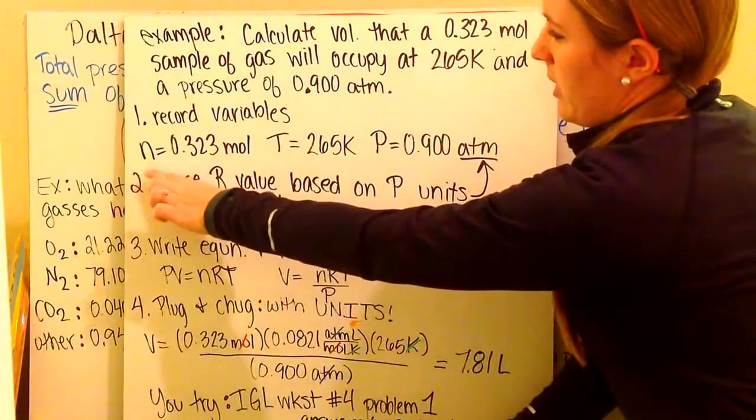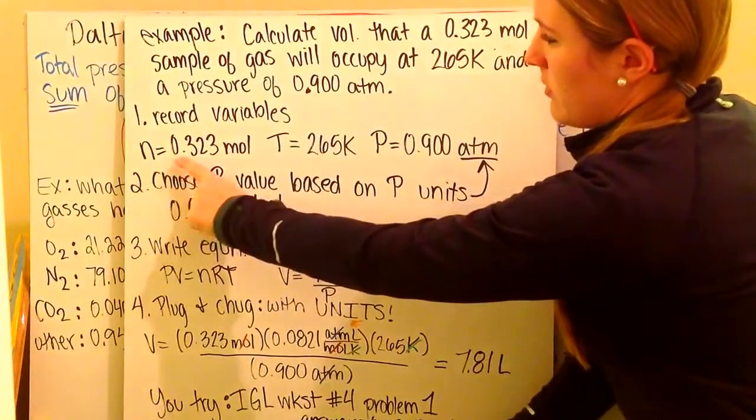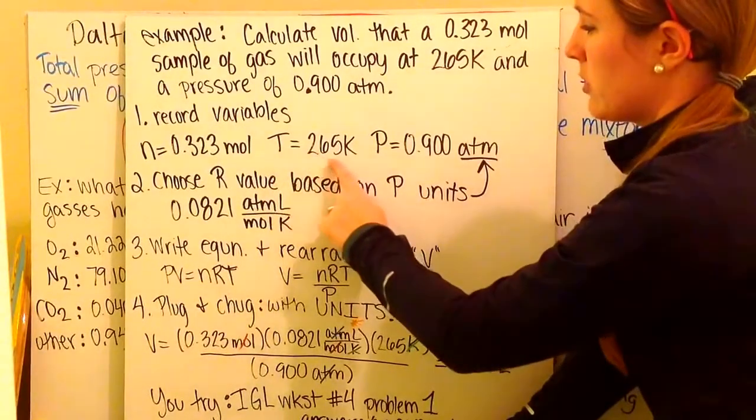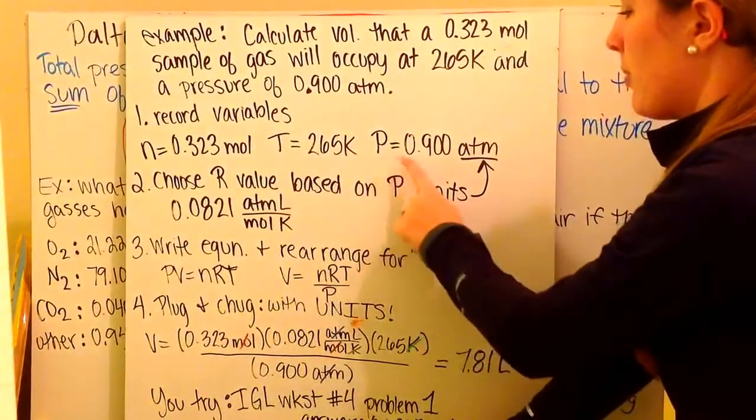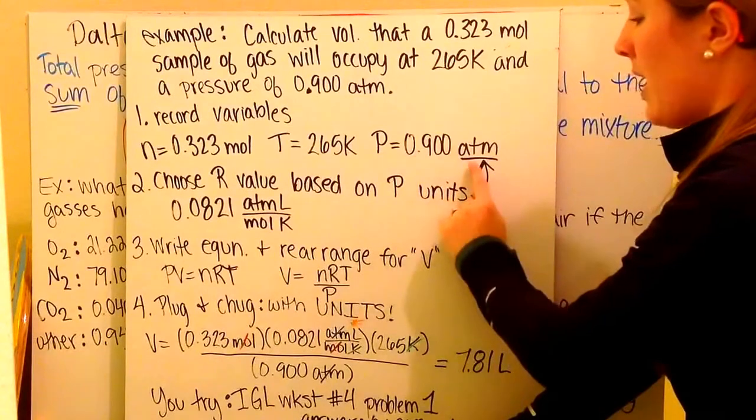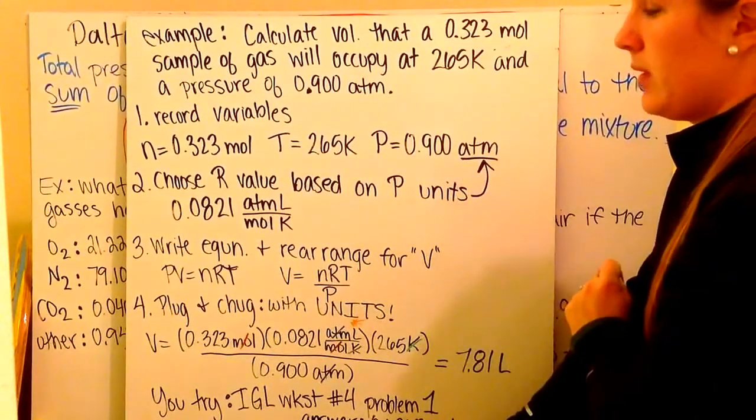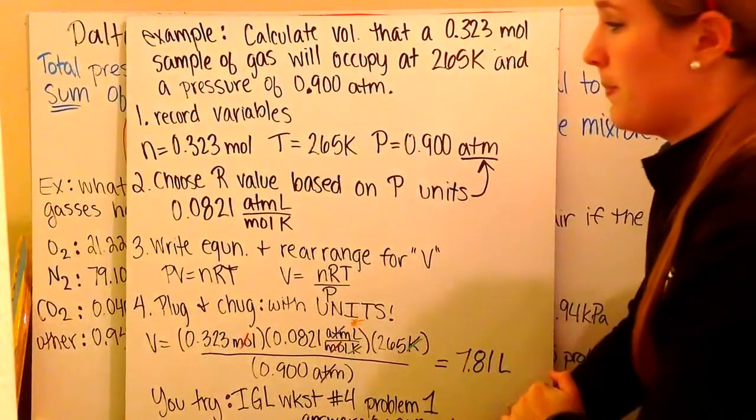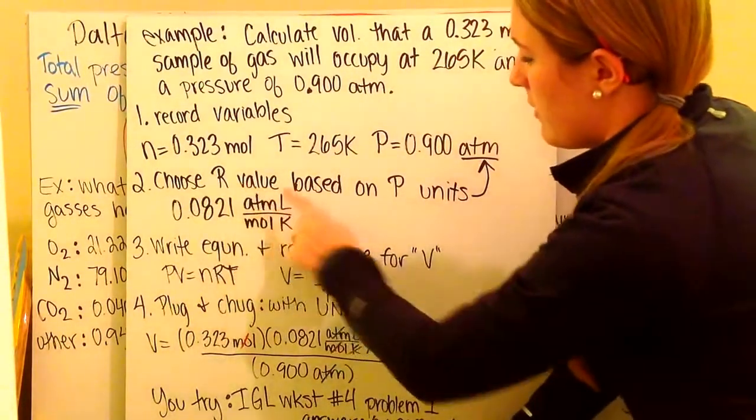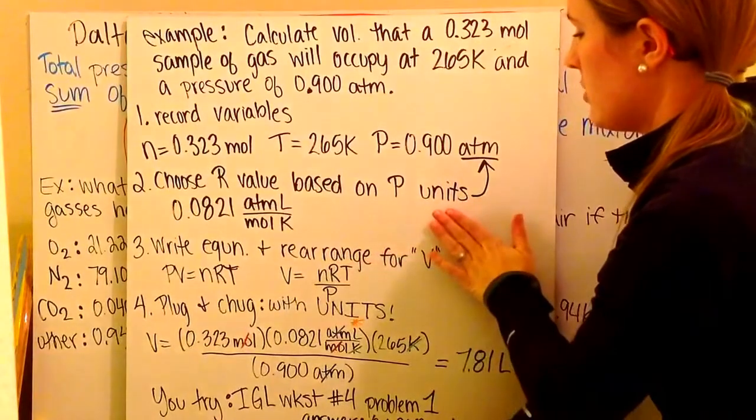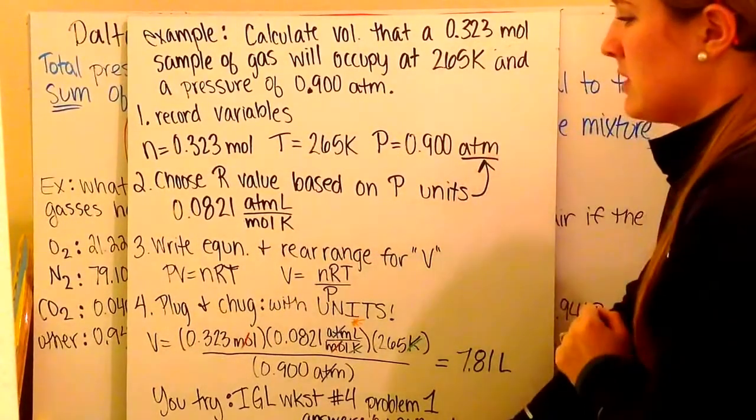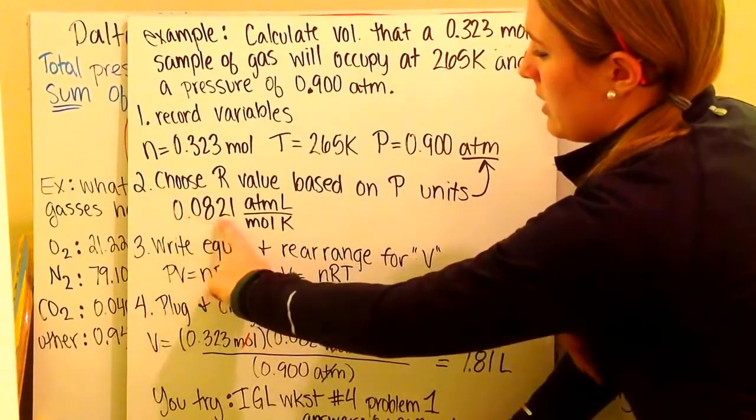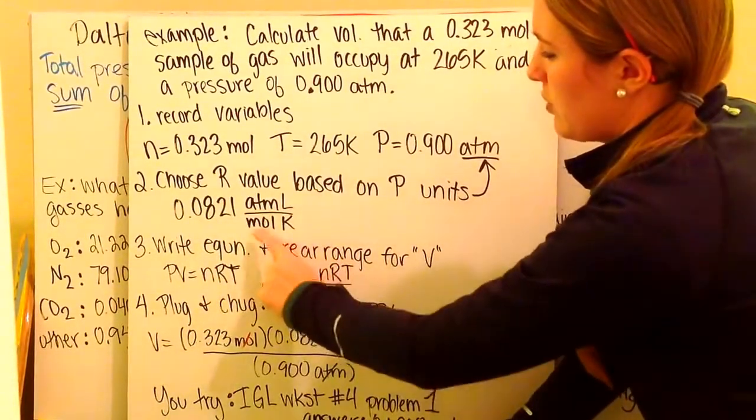We are starting with an N, a number of moles of 0.323 moles. We're starting with a temperature of 265 Kelvin, a pressure of 0.900 atmospheres. We are solving for volume, so volume is what we don't know. Next, we're going to choose an R value based on our pressure units. Our pressure units are atmospheres, so we need to choose to use 0.0821 atmospheres per mole Kelvin.